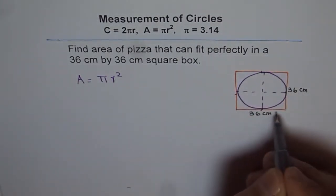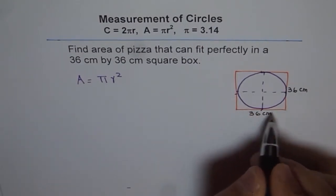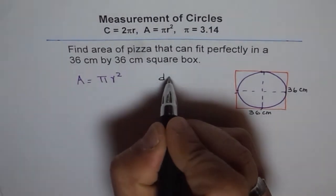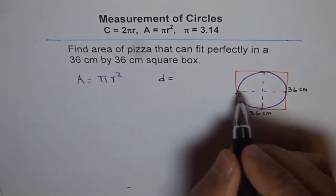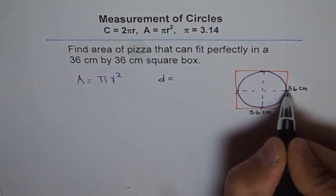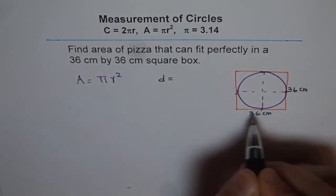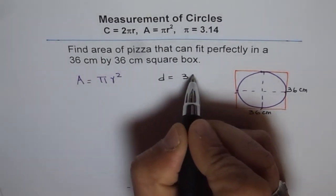Well, the diameter is 36. So we can calculate the radius. Radius is half of 36. We know diameter of this box and diameter of the circle, both are same. So this diameter is also 36, same as the side of the box. So the diameter is 36 cm.